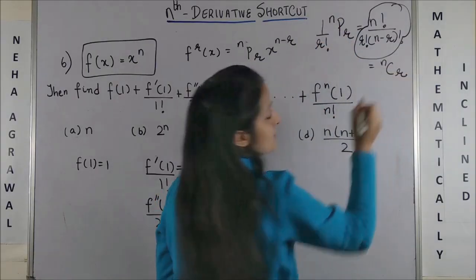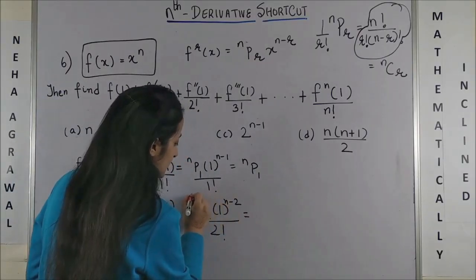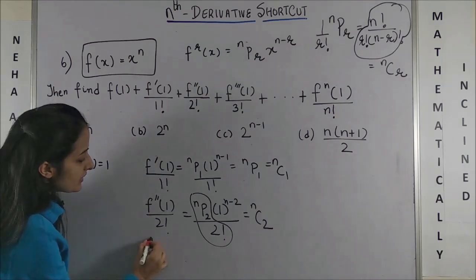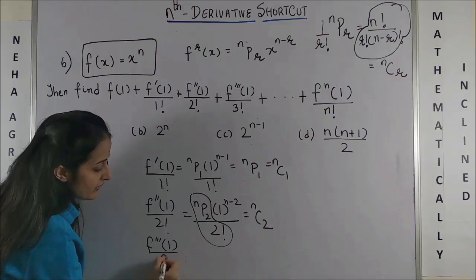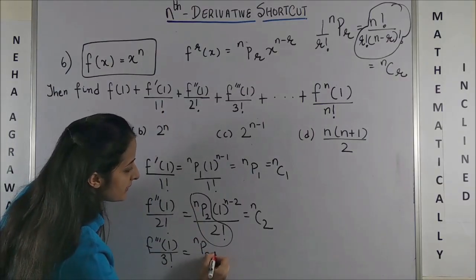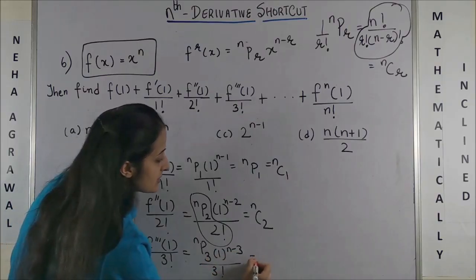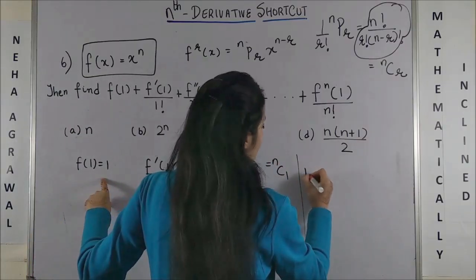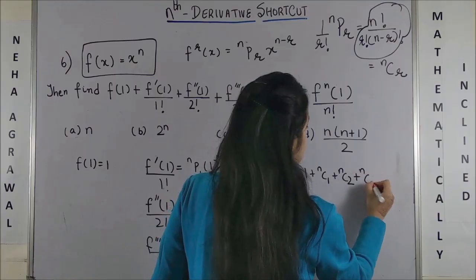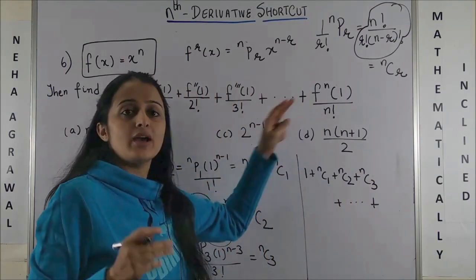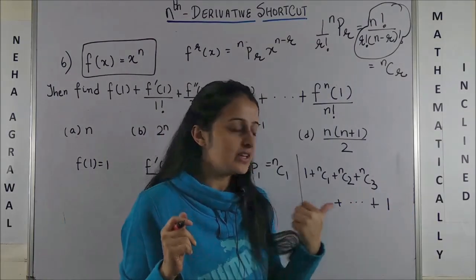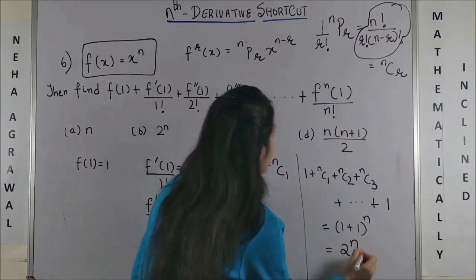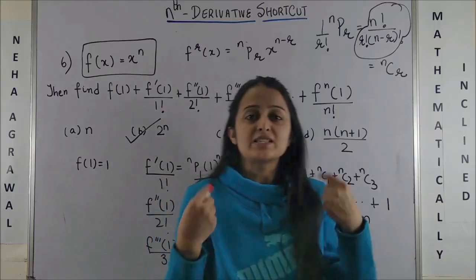So I'm going to replace this entire portion with nC2. That's it. Even your nP1 and nC1 are the same. Same way, looking at the pattern, if you have f'''(1) / 3!, as per my formula it would be nP3, 1 raised to power n minus 3, upon 3 factorial, so it's simply nC3. So going ahead with the trend, you would realize that this becomes 1 + nC1 + nC2 + nC3, so on and so forth. The last one would give you nCn, which is technically 1. And if you can recollect the formula for this, it was simply a binomial expansion for this one, which is 2 raised to power n. So the option is option B. Trust me, explaining the concept takes longer, but if you do it on your own, it would not take more than 3 to 4 seconds.